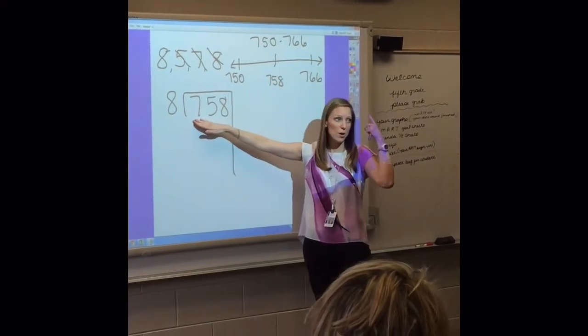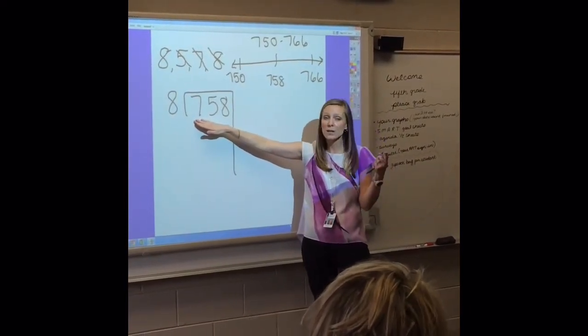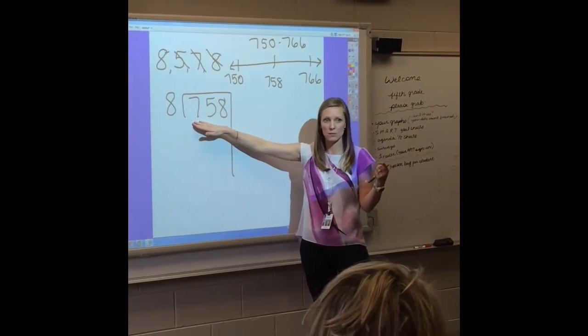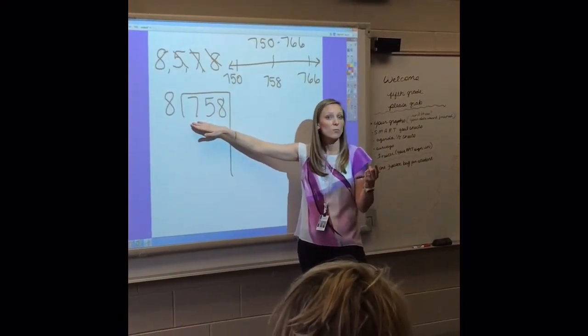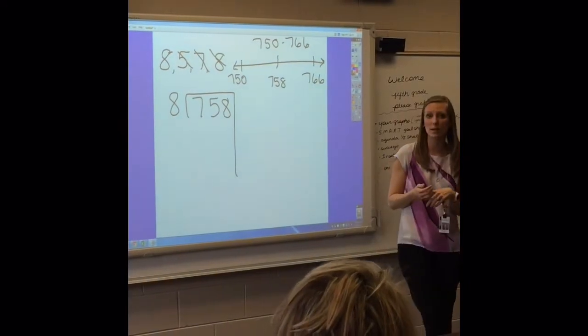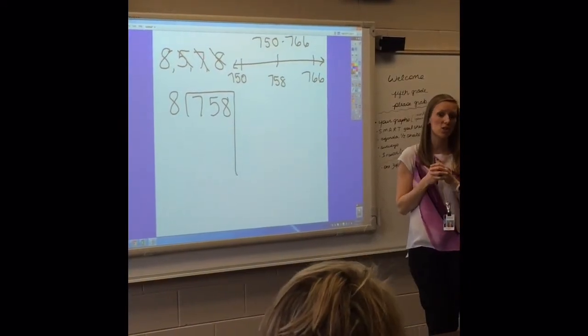We want to see what we would multiply 8 by to get us within this range. Now, I'm looking at this, and my brain is already thinking that I'm not going to be working with 100. Why would I not be working with 100? I think 100 is too high. Because it's too high, very good.